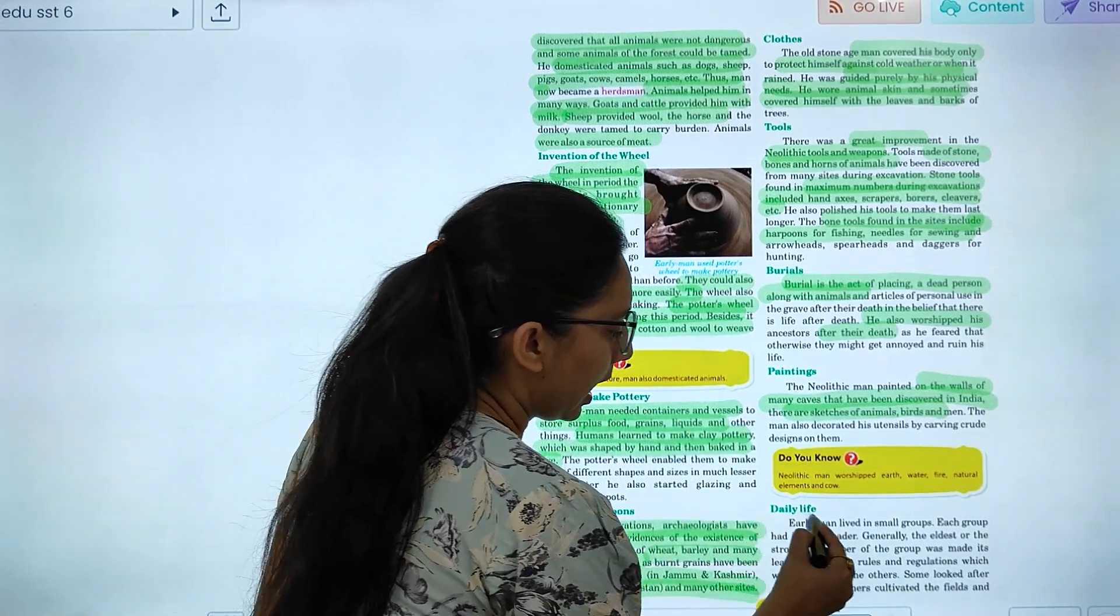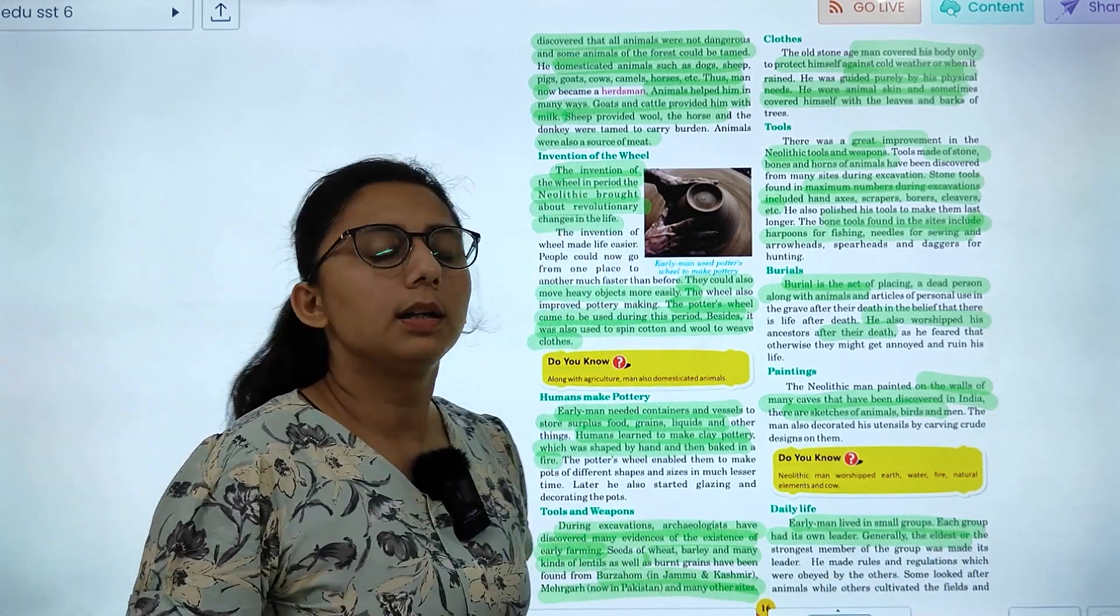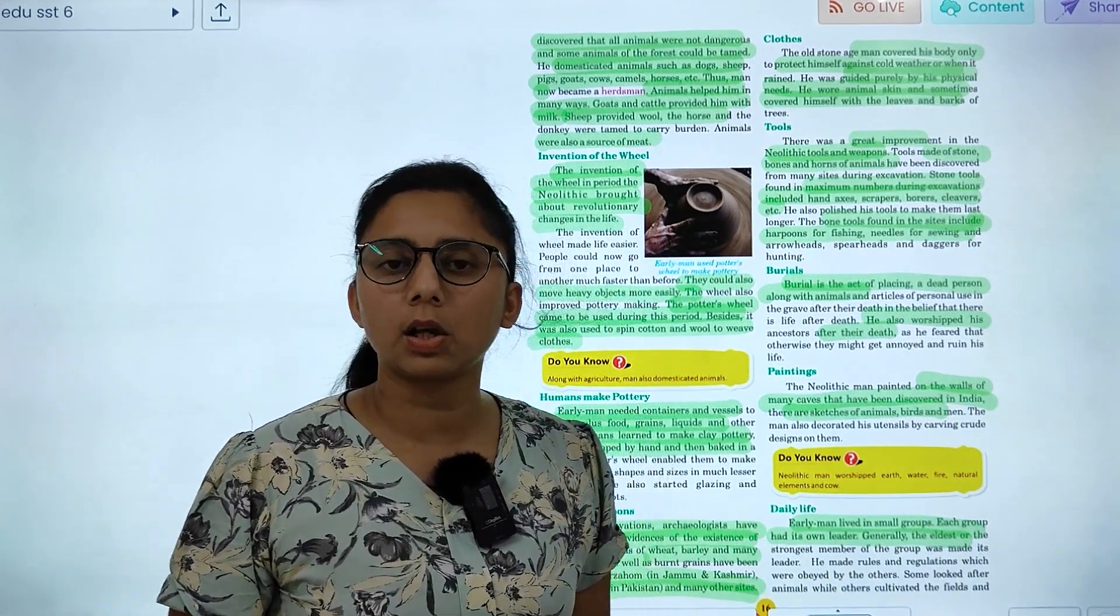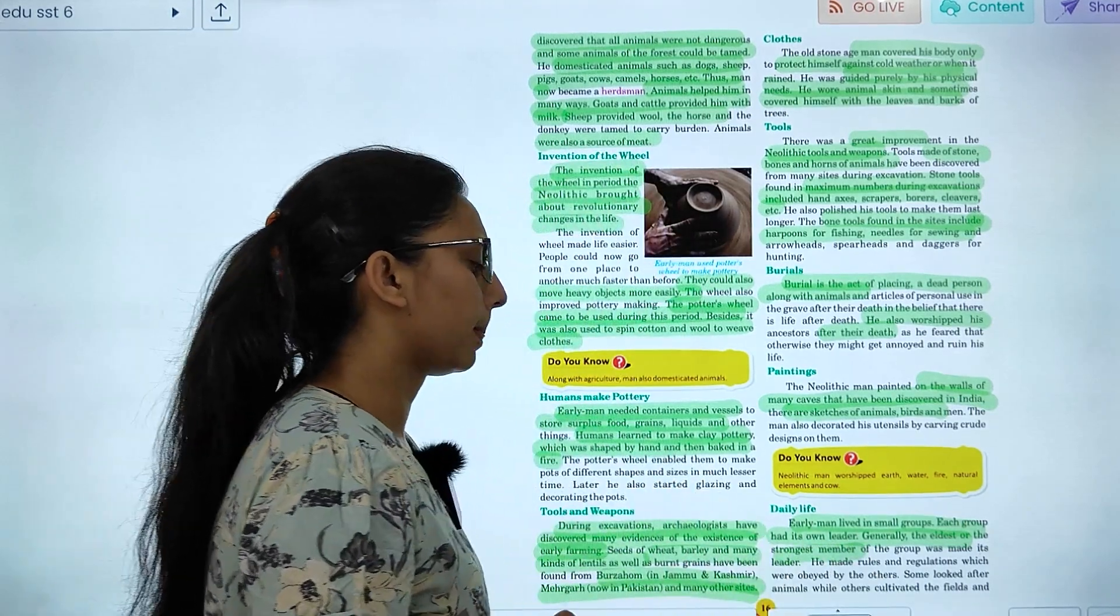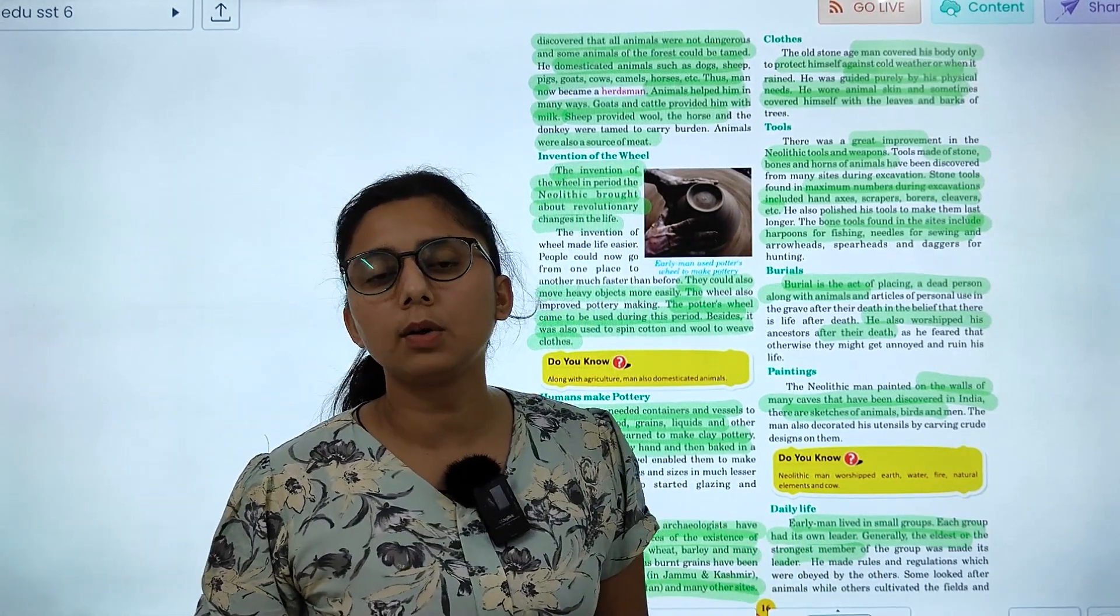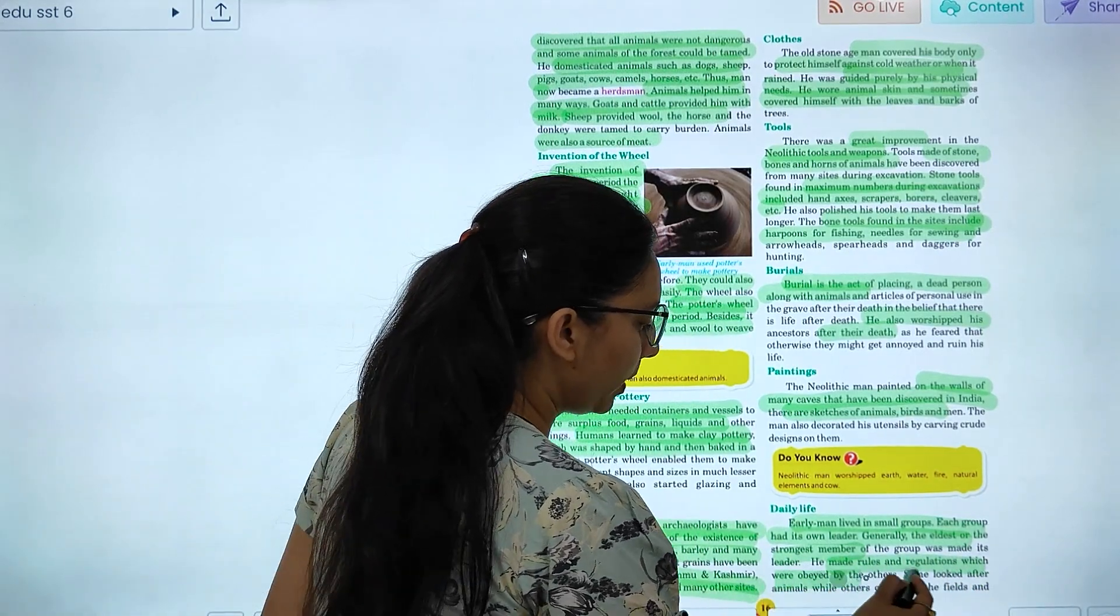This is our daily life. Early men lived in small groups. Each group has its own leader. First, people were living in groups. They all had their leaders. And the eldest and strongest member was looked up to as a leader.